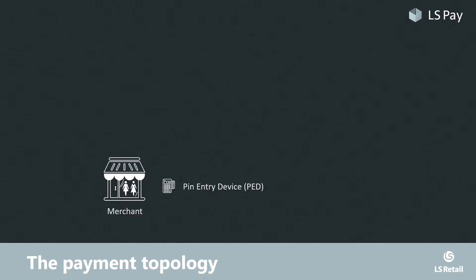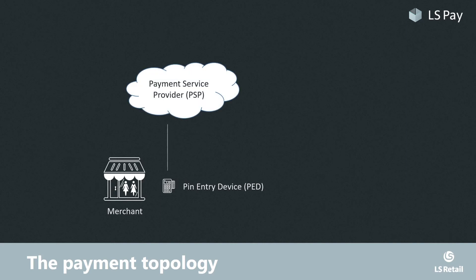The authorization request is then channeled to the payment service provider or PSP. The PSP is the entity LS Pay integrates with, and this is also the entity that sources the payment devices to the merchant and provides the payment gateway.